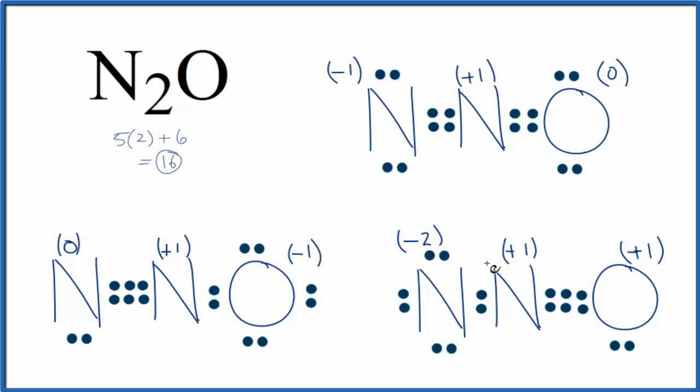So it looks like this one here is right out. This one doesn't work. We have a negative two, plus one, and a plus one. Here, it's pretty much the same thing. Positive one, negative one, positive one, negative one.